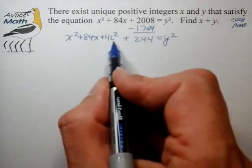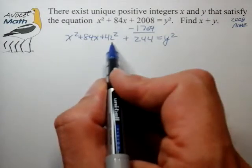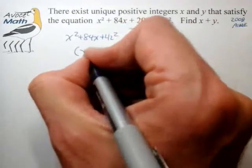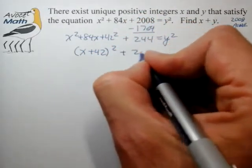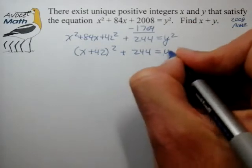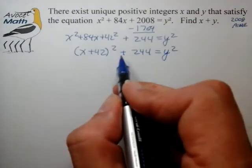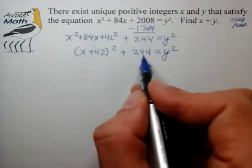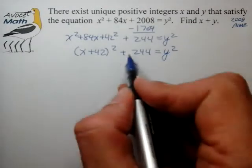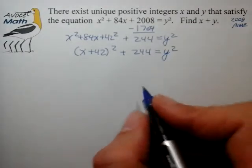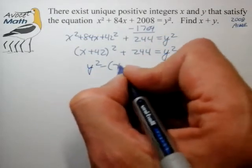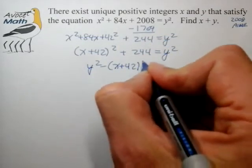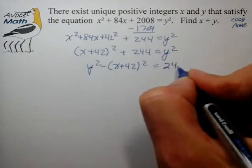Now we can factor this as (x + 42)² + 244 = y². And now we see another opportunity to create a factor group. So let's bring the 244 to the right, the y² to the left. We'll multiply each side by negative 1, and we're left with y² - (x + 42)² = 244.